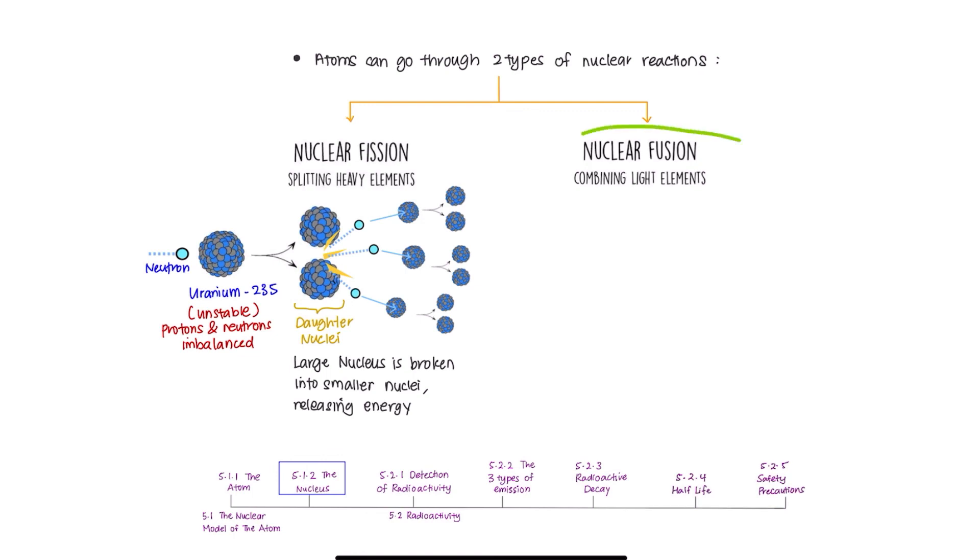Second, nuclear fusion. This is when two lighter nuclei join or fuse to form a larger single nucleus. For example, two hydrogen nuclei would fuse together to form helium. This process can only happen at a very high temperature that can only be achieved in the sun. So take note that nuclear fusion can only happen in the sun.